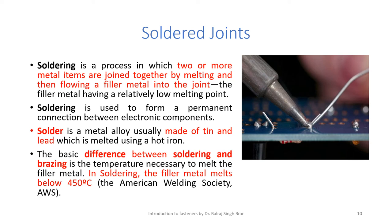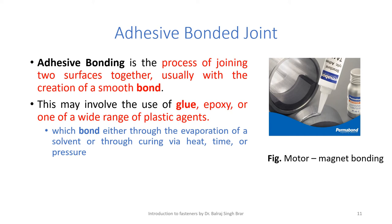Adhesive bonded joint is the process of joining two surfaces together, usually creating a smooth bond. As shown in the figure, motor parts are being joined together in which magnets are bonded to the casing of the motor with the help of adhesive. The adhesive may be a glue, epoxy, or one of a wide range of plastic agents, which bond through the evaporation of a solvent or through curing via heat, time, or pressure.